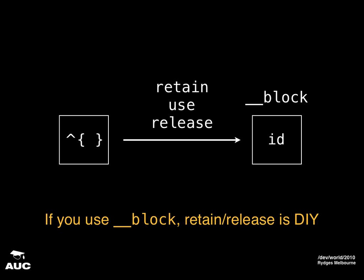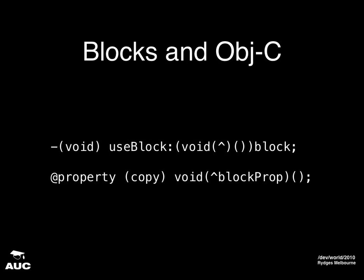Some more about blocks and Objective-C. Wouldn't it be nice if we could pass them into our methods and have properties with block types? It's really simple. We have the block type inside the parentheses, taking the name of the block out and putting it in front. For a property, the only thing you have to remember is use copy — don't use retain.